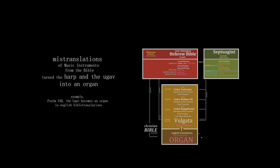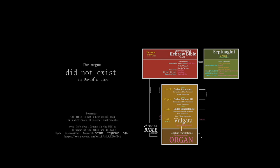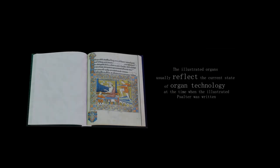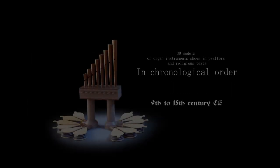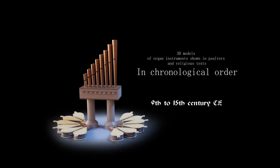Mistranslations of music instruments from the Bible turn the harp and the agav into an organ. The organ did not exist in David's time. The illustrated organs usually reflect the current state of organ technology at the time when the Psalter was written. They are an excellent source for organ historians. These are 3D models of organ instruments shown in Psalters and religious texts, in chronological order.